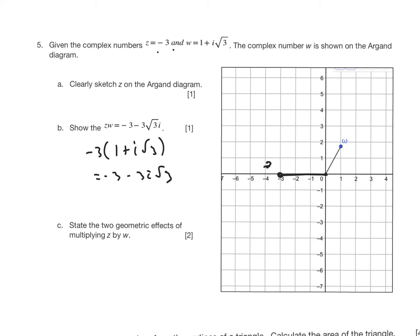And then it says state the two geometric effects of multiplying z by w. So here is z, and what's the effect of w? Well, in order to do so, I'm going to convert them both to modulus argument form. So w, I know this one here, my r value is going to be 2 when I take root 3 squared.